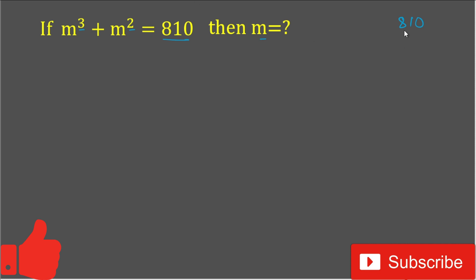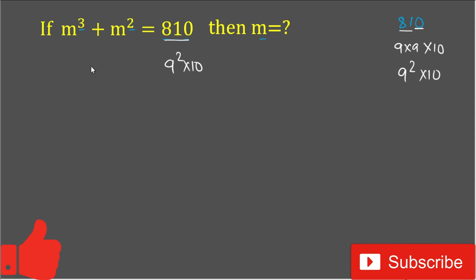We can write 810 as 81 times 10, and 81 is 9 times 9, which is 9². So 810 = 9² × 10. In place of 810, we will write 9² × 10.